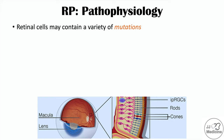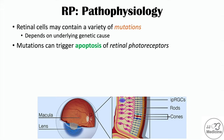The pathophysiology of retinitis pigmentosa is due to genetic mutations. Retinal cells may contain a variety of mutations — this depends on the underlying genetic cause, whether autosomal recessive requiring two affected alleles or autosomal dominant requiring only one. Regardless, there are mutations in those retinal photoreceptor cells — the rods and cones. What happens is that the mutations in those cells trigger apoptosis, or programmed cell death, causing the rods and cones to die.